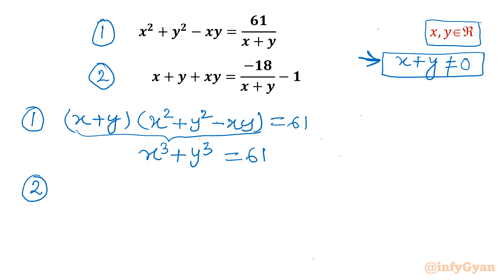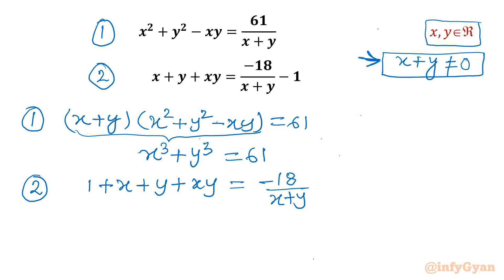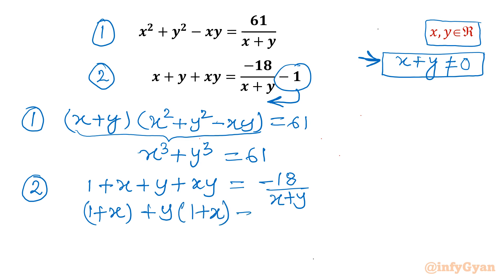Now for equation 2, I will begin with one manipulation: add 1 to both sides. So it becomes 1 plus x plus y plus xy equal to negative 18 over x plus y. We have taken the minus 1 to the left side. Now I will take common factors: 1 plus x and y, giving 1 plus x times 1 plus y equal to minus 18 over x plus y.